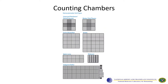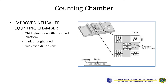Different counting chambers for blood or hemocytometers in the past have had different grid types. The counting chamber most familiar to us is the improved Neubauer counting chamber. This is a thick glass slide with inscriptions that could be dark or bright lined, and it also has fixed dimensions.